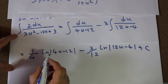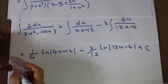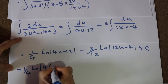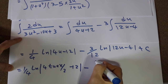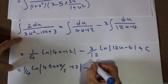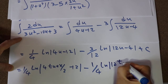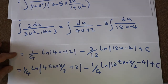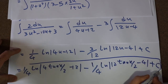All you need to do is substitute the parameter u by its definition. Since u was tangent x divided by 2, this becomes 1 divided by 4 times ln|4 times tangent(x/2) minus 12|, minus 1 divided by 4 times ln|12 times tangent(x/2) minus 4|, plus c, which is the constant of integration. And this is the solution to our integral.